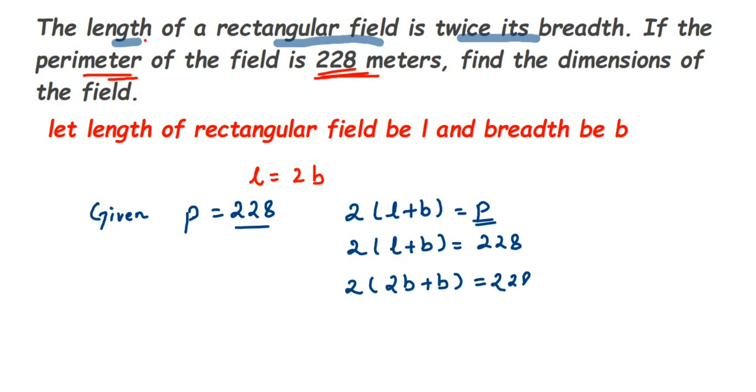Now this will become 2B, so this will become 3B. So 2 into 3B is equal to 228. Now open the bracket, so 2 times 3 is 6, so 6B is equal to 228. Now we want only the B value.